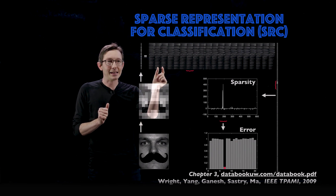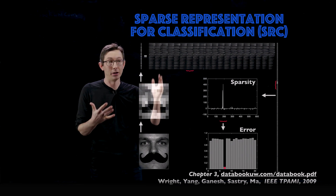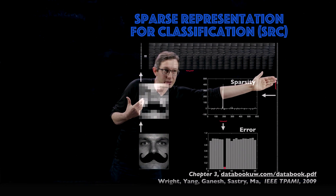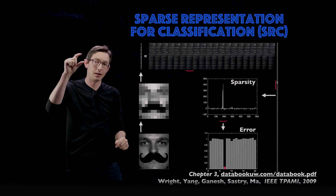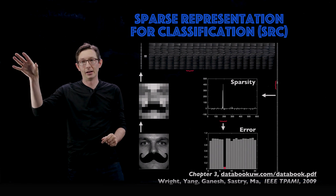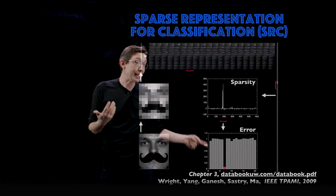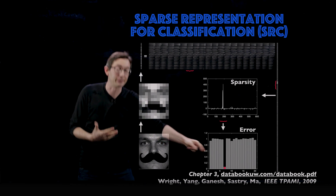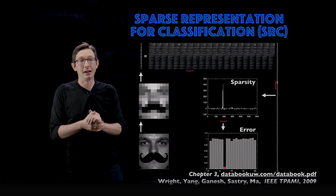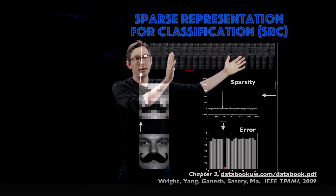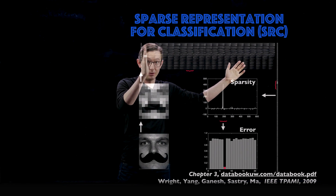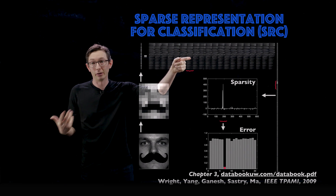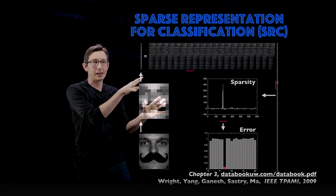This does require that your library has examples from many labeled classes. Once you have the sparse coefficient vector, you go person by person and see how well those coefficients approximate the test image for each person. This is extremely effective — it's a very clear indicator that the image came from person seven. The nonzero support in the sparse vector tells you where that person lives in the library. That's how you do SRC.